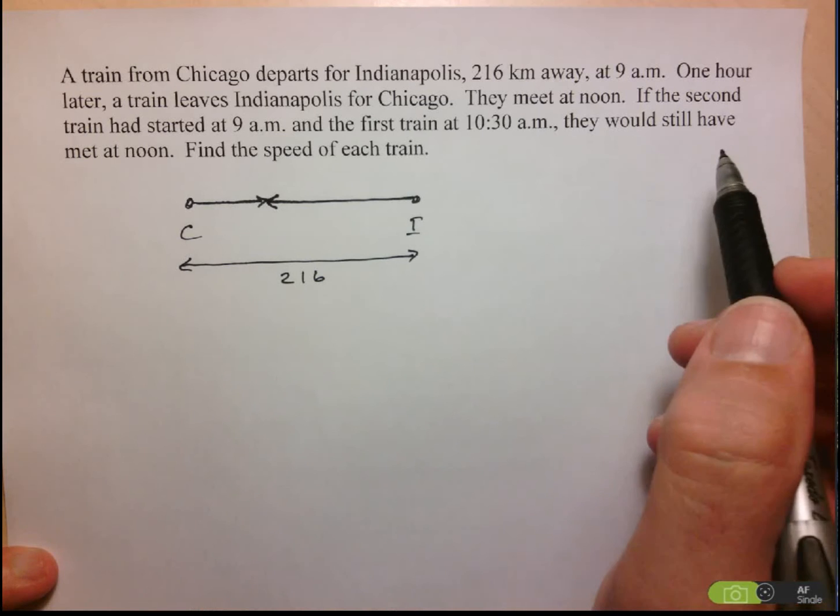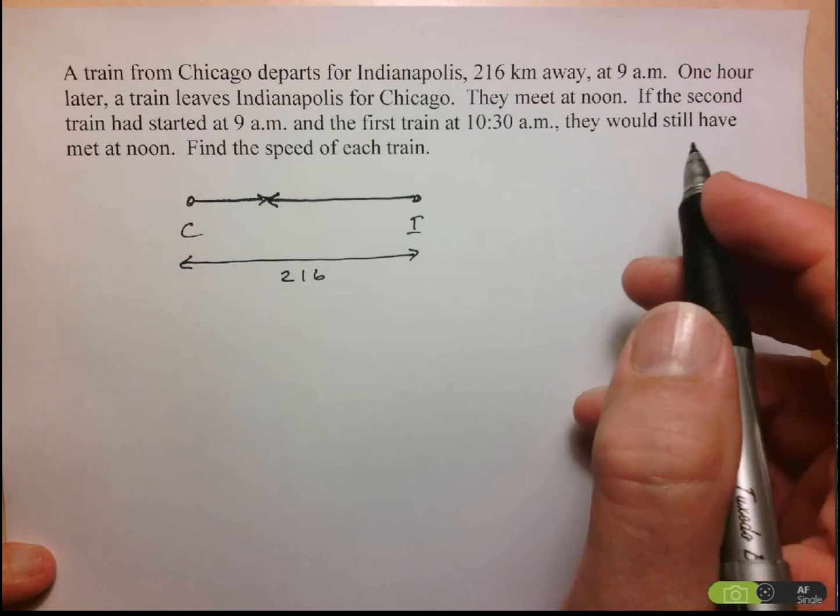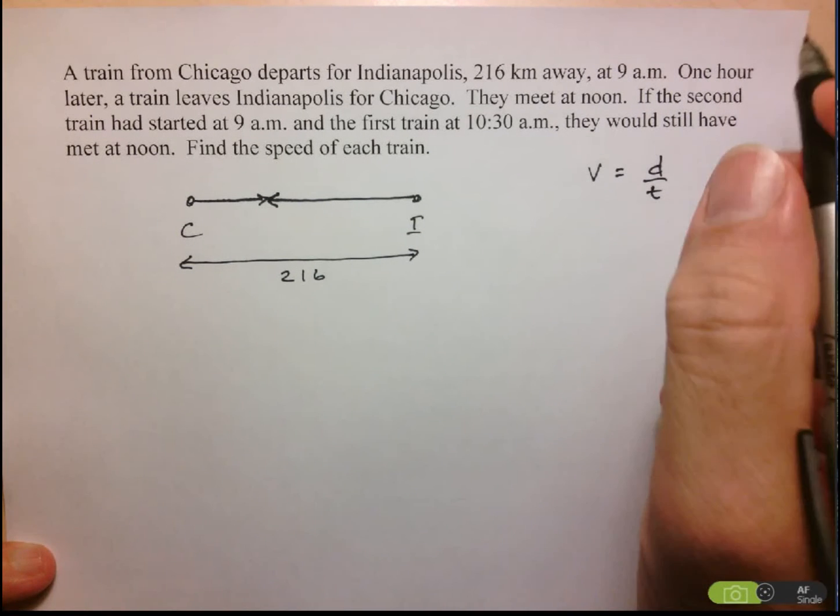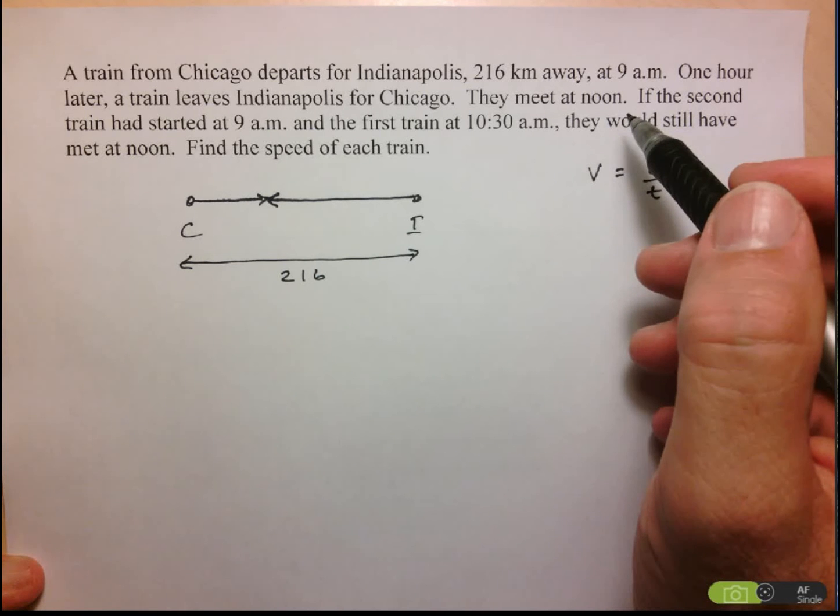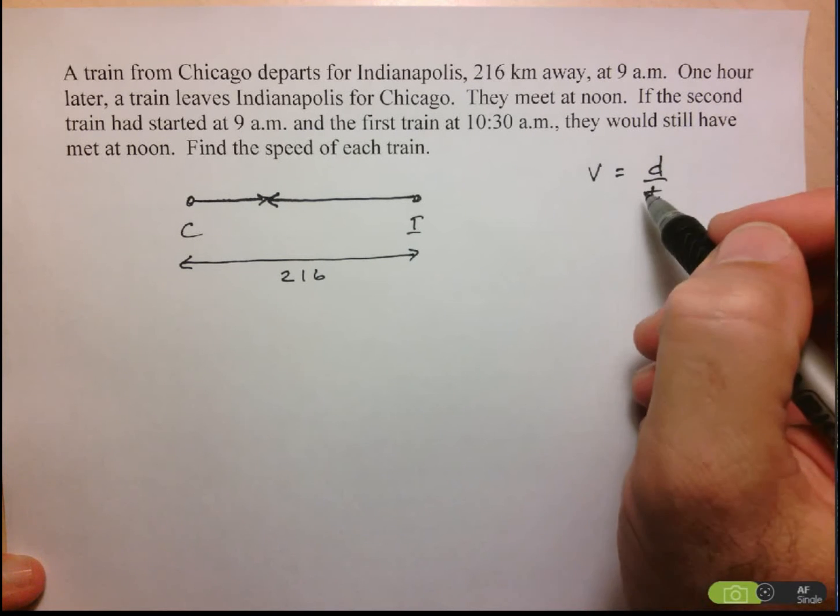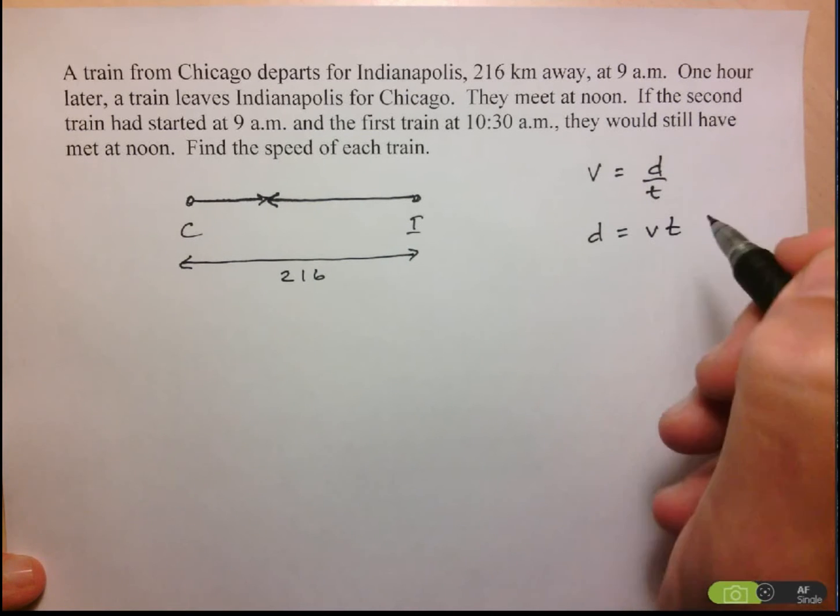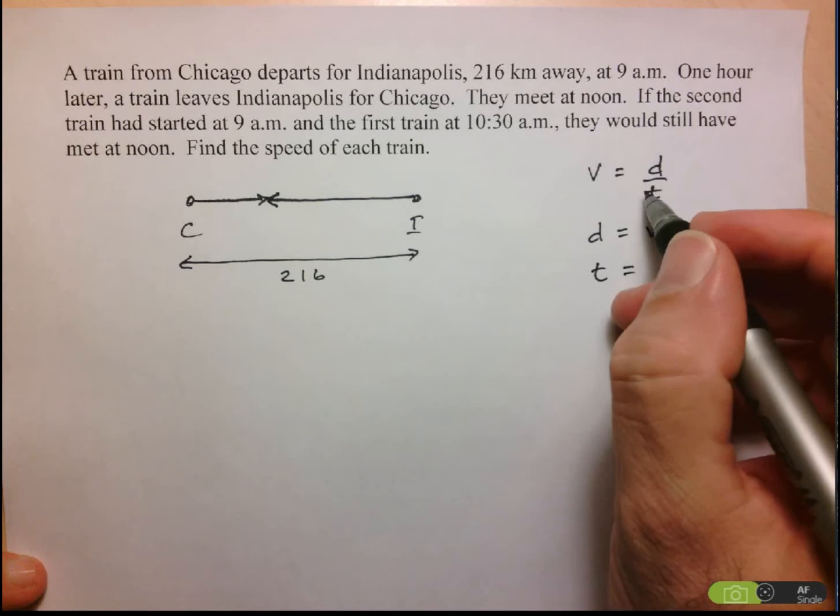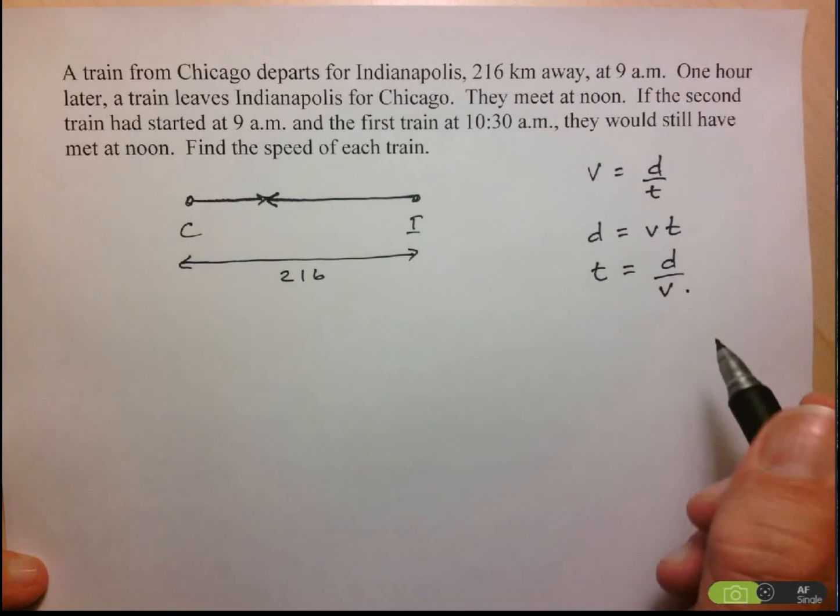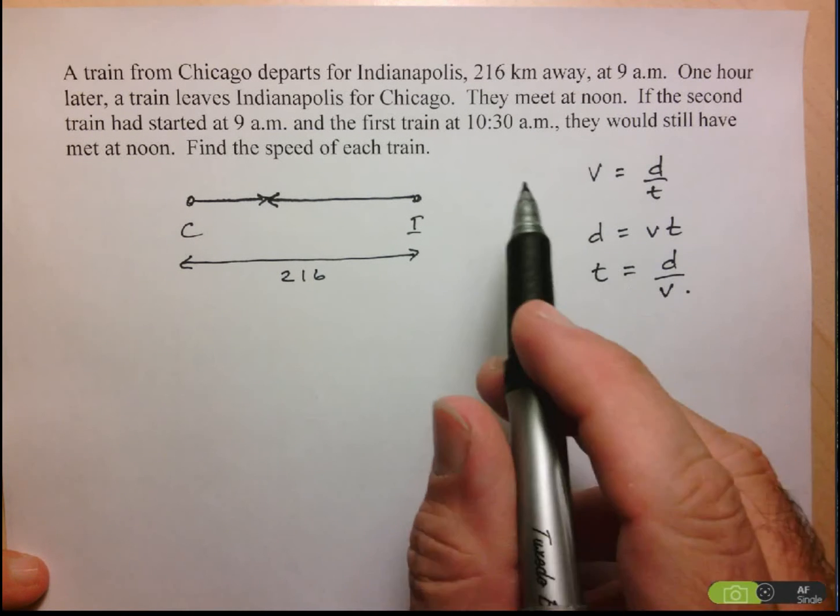Now, since we're dealing with speed, distance, and time, let's review the relationships between them. So we know that the speed is equal to the distance divided by time. Here I think we can assume that the speeds are constant. Nothing to indicate that we need to consider varying speeds. And of course, this can be rewritten. I can solve for D. So the distance is the speed times time, or I can even isolate T, do a little cross multiplication here to get distance over speed. So these are the relationships that I have access to, given the measures that I'm given.